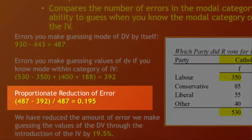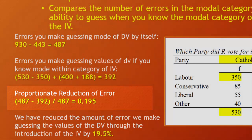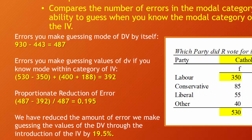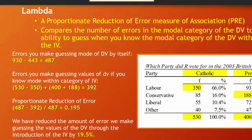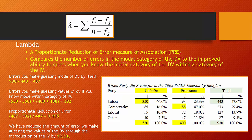So if we knew someone was Catholic and chose the modal category for Catholics — Labour — we have 530 Catholics minus 350 correct guesses, leaving 180 errors. For Protestants, we have 400 Protestants, the mode is Conservative, 188 voted Conservative, so we'd make 212 errors. When you add the errors for each category of the independent variable, you get 392 errors total. We can then calculate the proportionate reduction of error: total errors minus errors using the independent variable, divided by total errors. That gives us a coefficient of 0.195 — we've reduced our error by 19.5%.